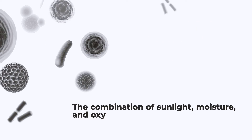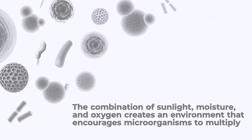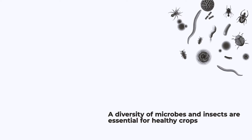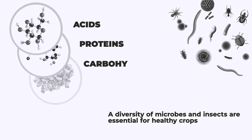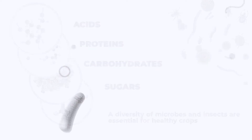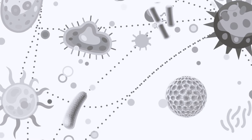Sunlight, moisture, and oxygen create an environment that encourages microorganisms to multiply. A diversity of microbes and insects are essential for healthy crops. As the microorganisms eat the organic material, they leave acids, proteins, carbohydrates, and sugars in the soil, and these are quickly utilized by developing plants. Organic acids are considered the spark of life because they conduct electricity.